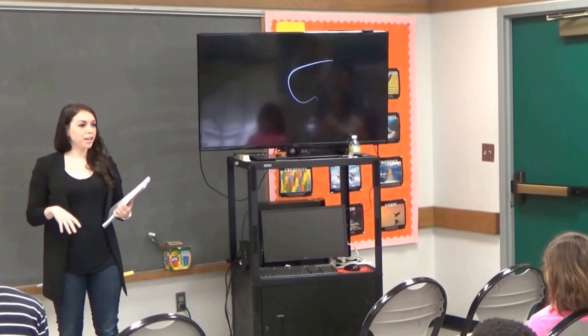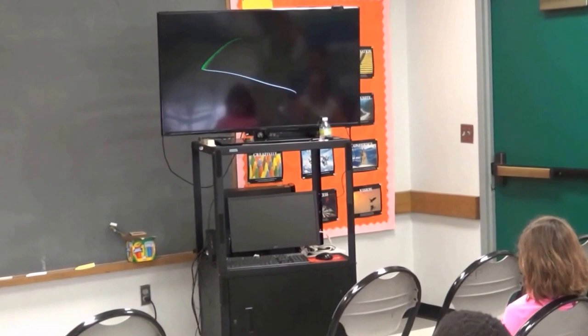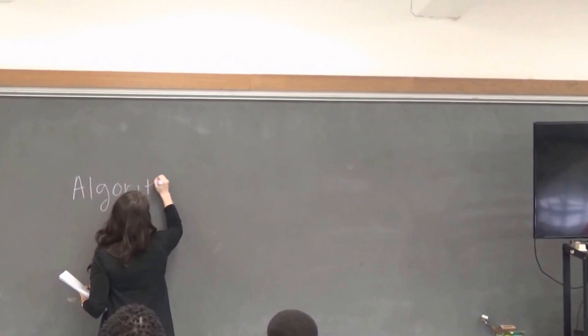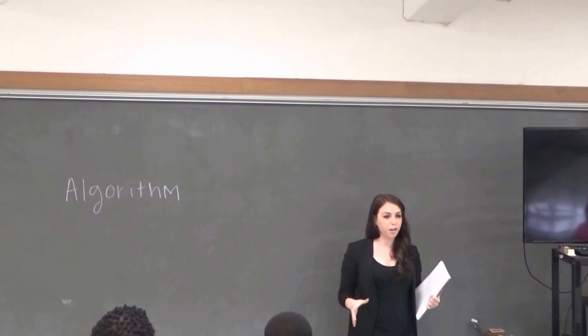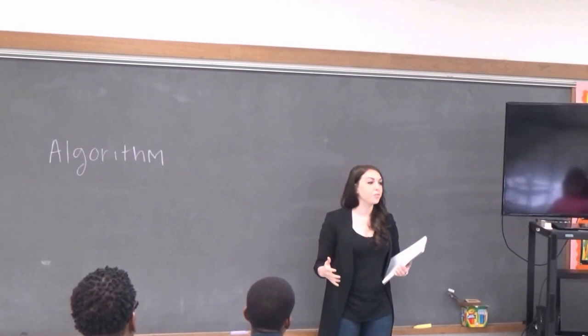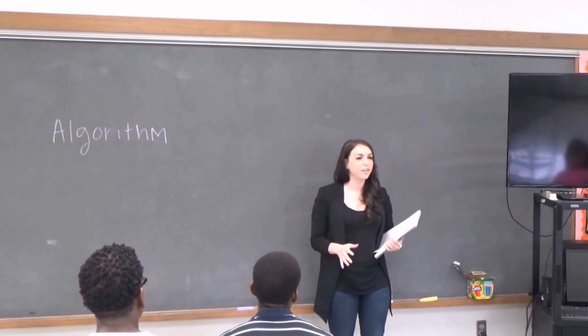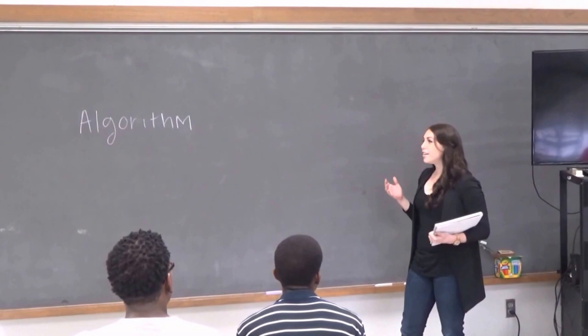In our spoken language we have sentences, but in code we have algorithms. An algorithm is basically a set of instructions — a sentence that you tell the computer in order to make it do what you want. People think of computers as really, really smart, and they are, but really they're just really good at following directions. So when you tell it what to do, if you say it the correct way, it'll do it for you.